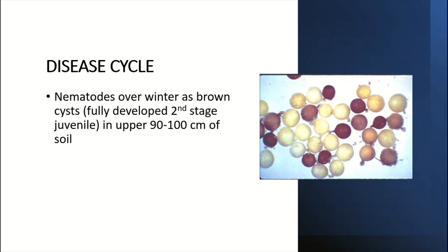In the disease cycle, cyst nematodes overwinter as brown cysts. Cysts are the forms which nematodes use for overwintering or oversummering. Fully developed second-stage juveniles emerge from the cysts, infect the plants, and then develop into third and fourth stage males and female nematodes. These cysts are present in the upper 90 to 100 centimeters of the soil.